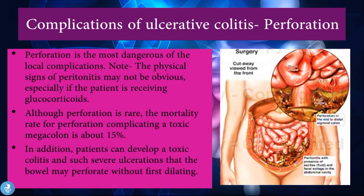Another complication is colonic perforation, which is the most dangerous of all local complications. Physical signs of peritonitis may not be obvious, especially if the patient is receiving glucocorticoid therapy. Although perforation is rare, the mortality rate for perforation complicating a toxic megacolon is about 15%. Patients can also develop toxic colitis with such severe ulceration that the bowel may perforate without first dilating.